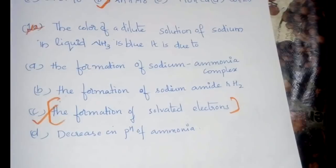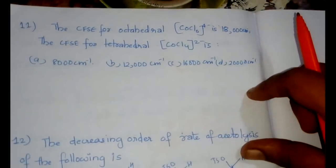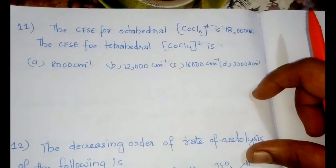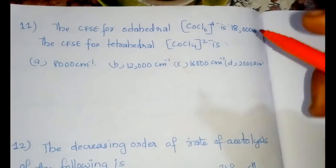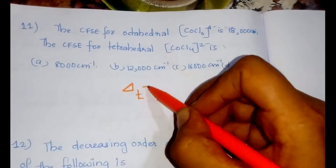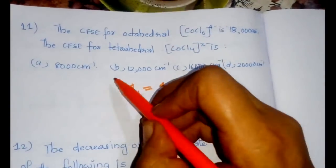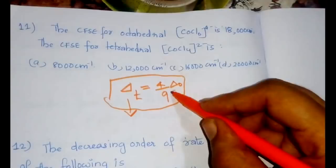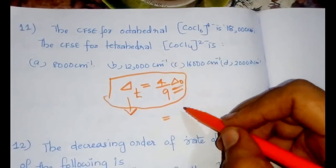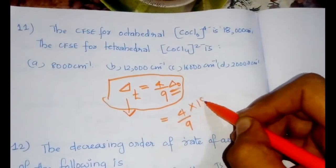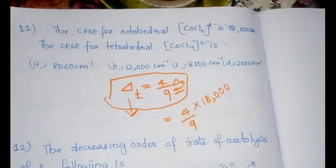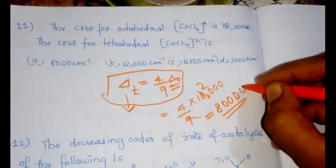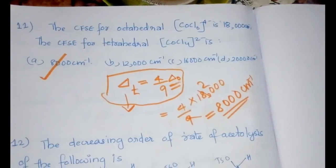The CFSE for octahedral [CoCl₆]⁴⁻ is 18,000 cm⁻¹. The CFSE for tetrahedral [CoCl₄]²⁻ is what? The relationship is Δₜ = 4/9 × Δₒ. We have to find the CFSE of tetrahedral complex, so directly (4/9) × 18,000 = 8,000 cm⁻¹, which is option A. This question was also asked in CUSAT 2016.